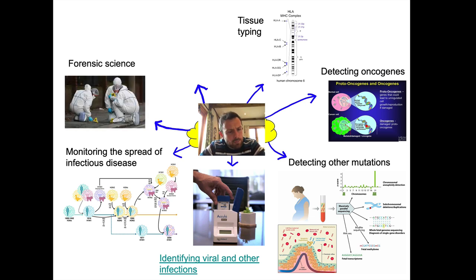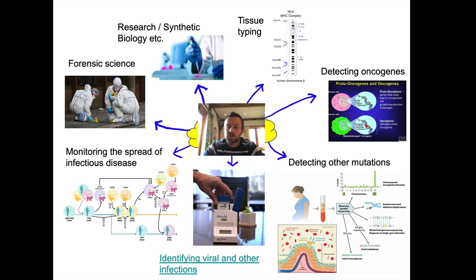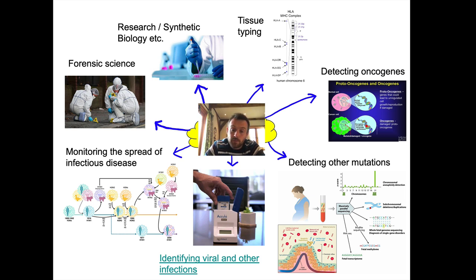Forensic science is probably an application of PCR you're already aware of. We can get DNA from tiny fragments of blood or bodily fluids at a crime scene, copy those genes billions of times, and then perform DNA profiling on them — which we looked at last lesson. Finally, PCR is a key tool in biochemical and biomedical research, and can also be used in synthetic biology, as we looked at last lesson.